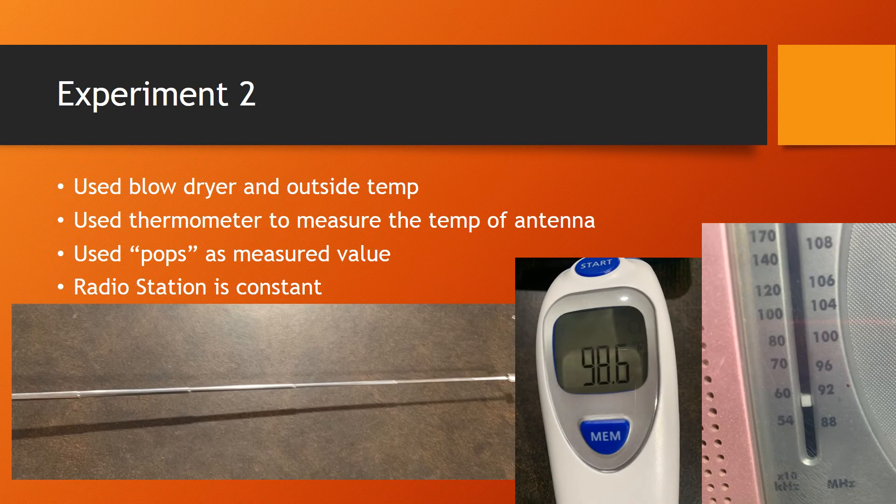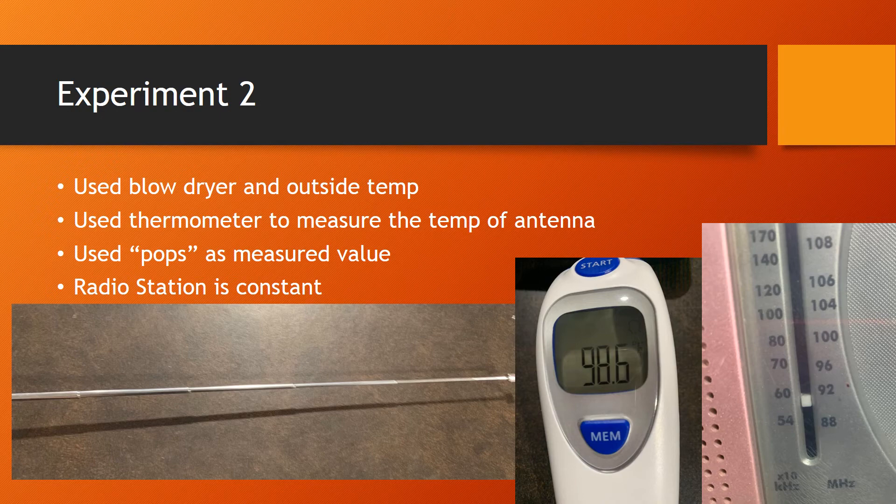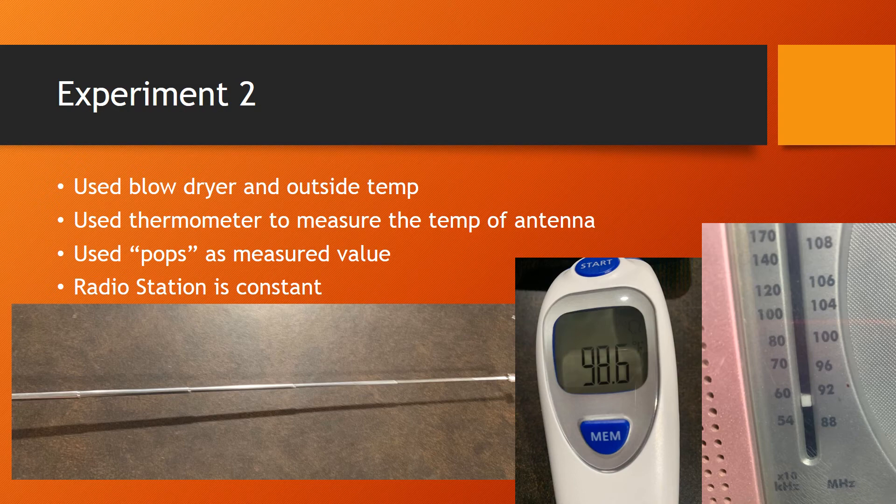My second experiment was done with more accessible equipment and has data for heating and cooling the antenna. I used a digital thermometer to find the temperature of the antenna. I used my body temperature to ensure that the thermometer was accurate. To heat the antenna, I used a hair dryer, and I used the outside temperature to cool the antenna. Pops was my measured value, and the radio station I used remained constant, which was approximately 59 AM, as shown in the picture of the radio.